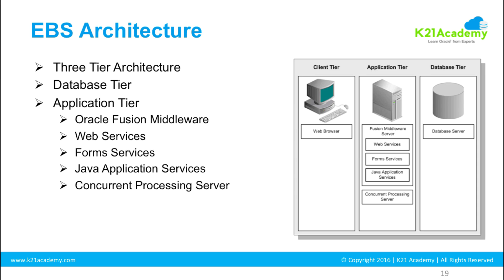The application tier runs on top of Oracle Fusion Middleware and has web services — a listener. In the previous lesson I went to URL port 8011, which was actually a web listener. There are also form services — we opened a form running as an applet on the client browser. Then there are Java application services: when we went to the URL with forward-slash OA_HTML and OA core, those are Java application services where Java code runs. There is also concurrent processing.